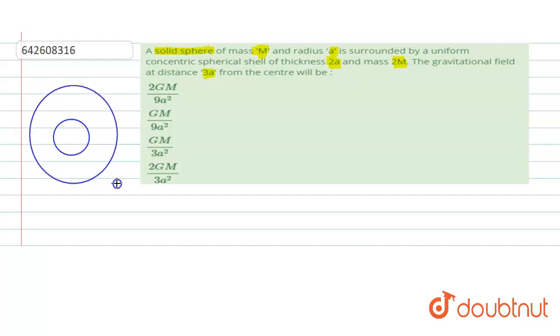This sphere has thickness 2a and mass 2M, and the inner sphere has mass M and radius a. So as a whole, this total has the radius 3a. Now we have to find the gravitational field at a distance 3a from the center.